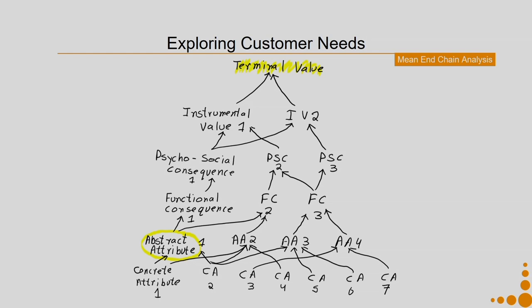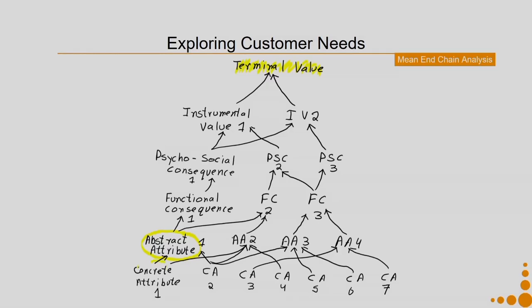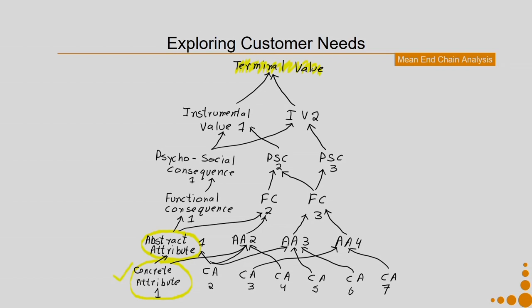Why start from the abstract attribute level? As we discussed in the fresh water PSS case — 'I want safe drinking water.' Safe drinking water is an abstract concept. From that abstract attribute, we define the concrete attributes: safe drinking water implies no microorganisms in the water and no chemicals in the water. To remove chemicals you incorporate processes A, B, C of purification; to get rid of microorganisms, process D. Hence, we always start at the abstract attribute level. You can involve all stakeholders, or after interviewing them sit down and do the means and chain analysis yourself, then go back to stakeholders for modifications.